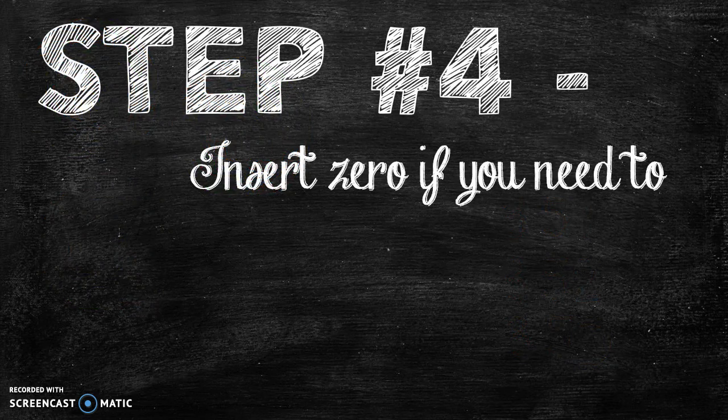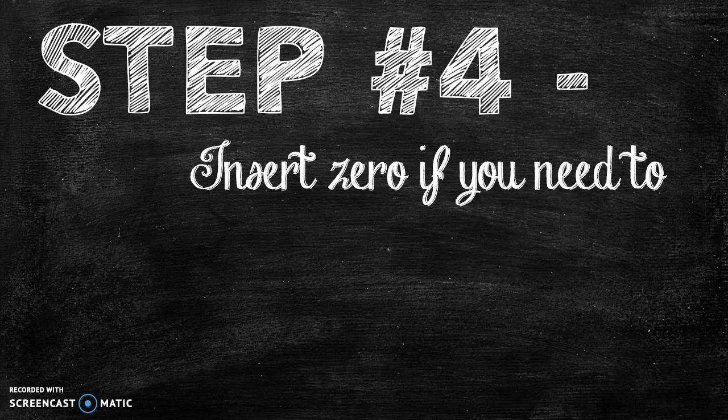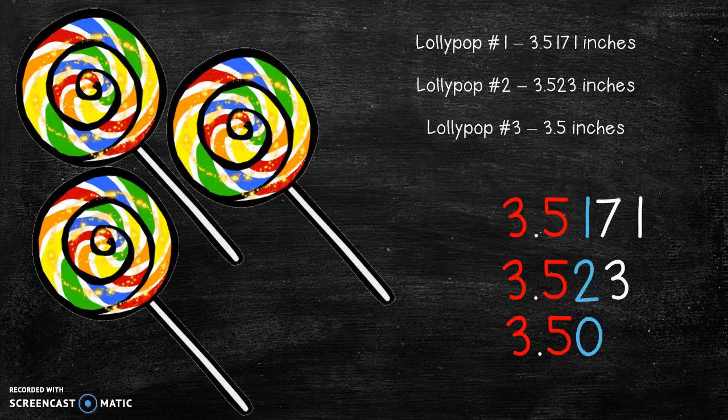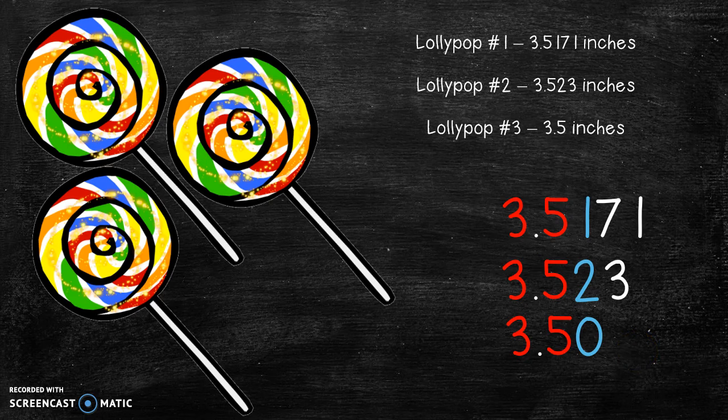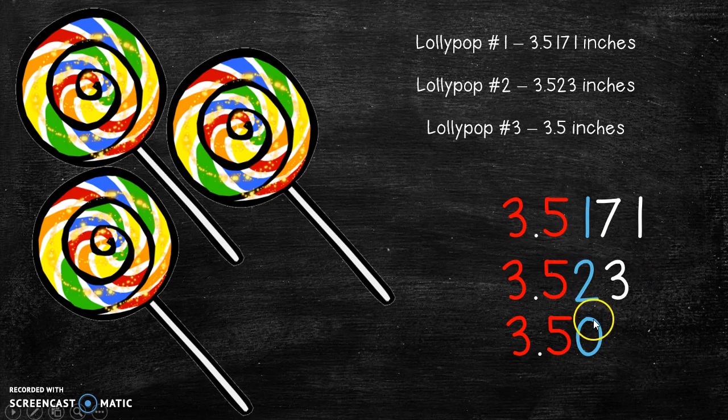Step four, insert zeros if you need to. Remember zero has a value of nothing, so if you add it just to help you compare like we did down here, it isn't going to make a difference to the value of the number. So now we have three different numbers. We have a one, a two, and a zero. Can you compare those three numbers?